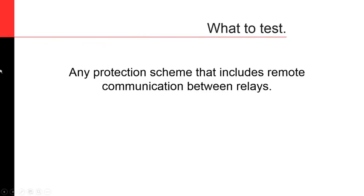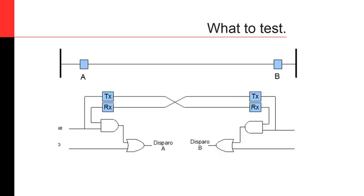So, what do you test? When you're talking about end-to-end testing, what you are testing is any protection scheme that includes remote communication between relays. For example, you have a line with relay A at site A and relay B at site B. They are communicating using some sort of communications protocol. Relay A is communicating to relay B whether it thinks it should trip or not. Relay B relays that same communication back to relay A. If both determine that they have to trip, they'll trip together.